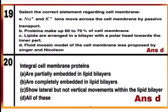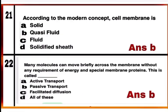Membrane proteins are of two types: integral or peripheral. Peripheral proteins lie on the surface, while integral proteins are partially or totally embedded in the membrane and show lateral movements within the lipid bilayer. So options A, B, and C are all true about integral cell membrane proteins. Mark D — all of these — as the correct answer.